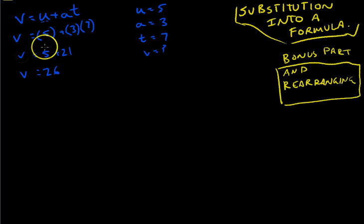So we don't know what this formula does. Well, I do, but you guys don't, and it doesn't matter. You know that if U equals 5, A equals 3, and T equals 7, then V must equal 26.